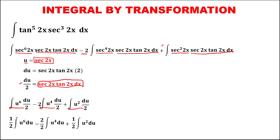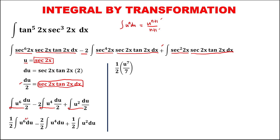Evaluating the integral using the formula that the integral of u to the power n du equals u to the power n plus 1 over n plus 1: the integral of u to the power 6 gives u to the power 7 over 7, and since 2 over 2 is 1, the integral of u to the power 4 gives u to the power 5 over 5. Bringing down the plus one-half term, plus 1 for the exponent gives u to the power 3 over 3, then plus C.